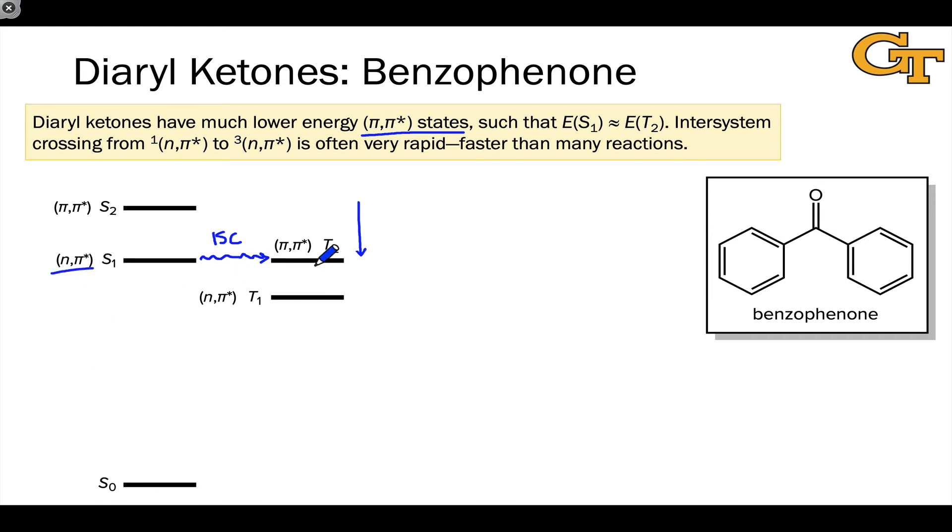Note the change in orbital configuration from n,π* to π,π*. And the change in spin from singlet to triplet. If we want to get into numbers here, you'll see the numbers 10^10 or 10^11 per second thrown around for the rate constant of intersystem crossing in diaryl ketones.